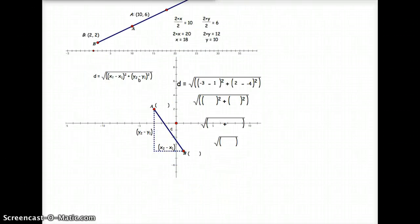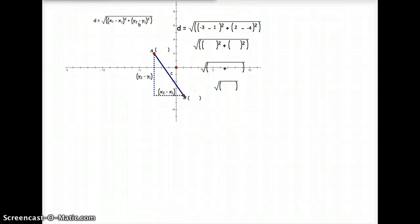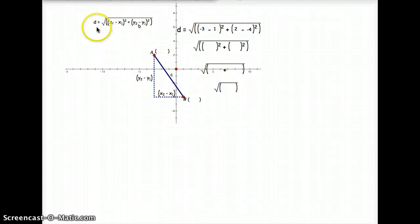And last but not least, let's talk about our distance formula. Our distance formula is right here. Again, should be review from last year. Distance equals the square root of x2 minus x1 squared, plus y2 minus y1 squared.